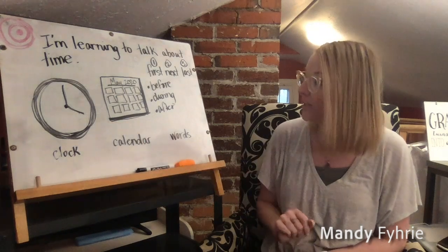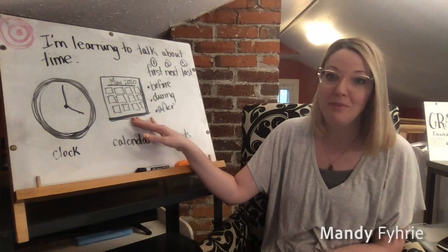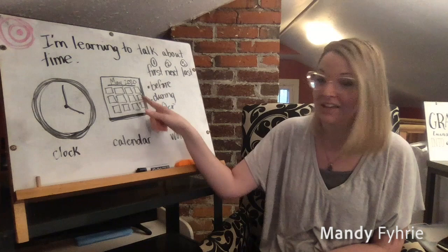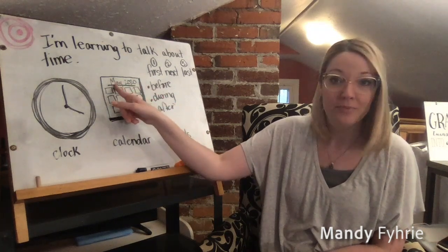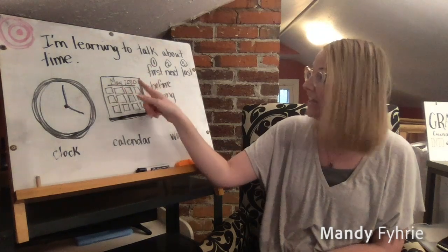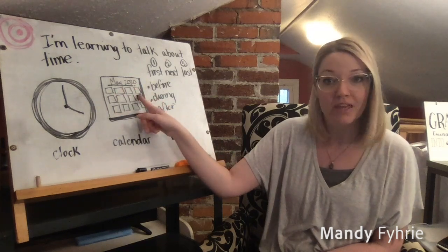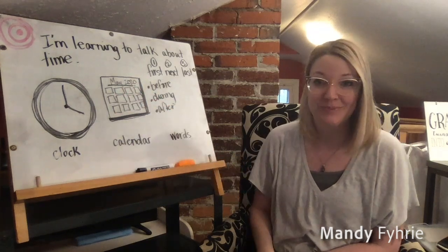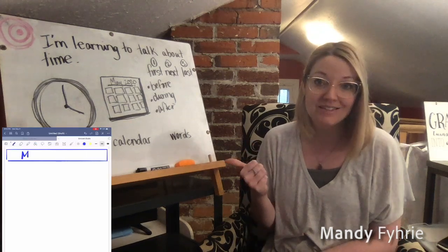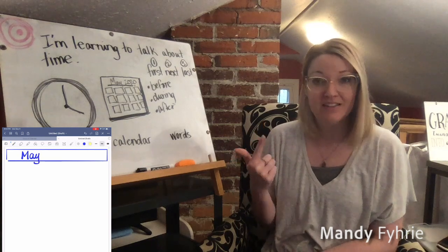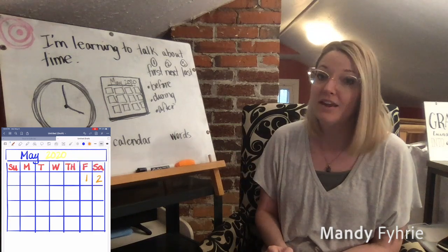Another way that we can measure time is by looking at a calendar. This is just a sketch, so please don't worry about whether there are enough boxes — it's just a sketch so you can remember what it is. It has the month — right now we're in the month of May — it has the year 2020, and then we would have the days of the week and the date.